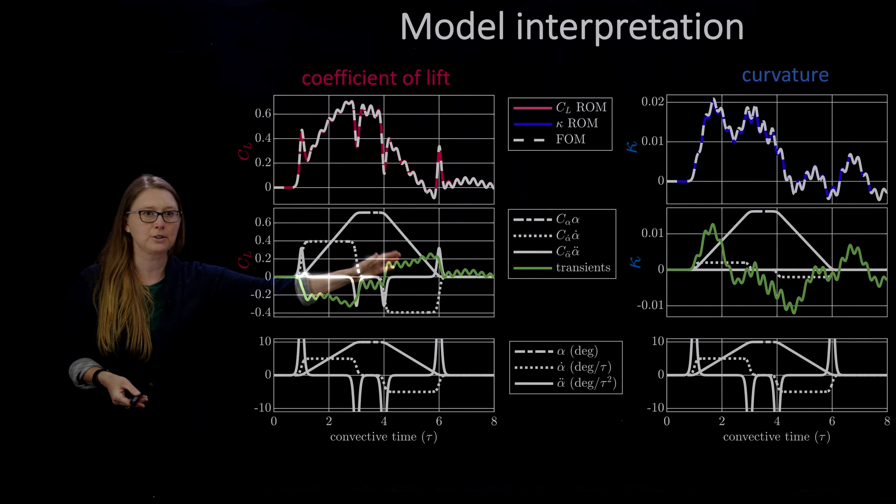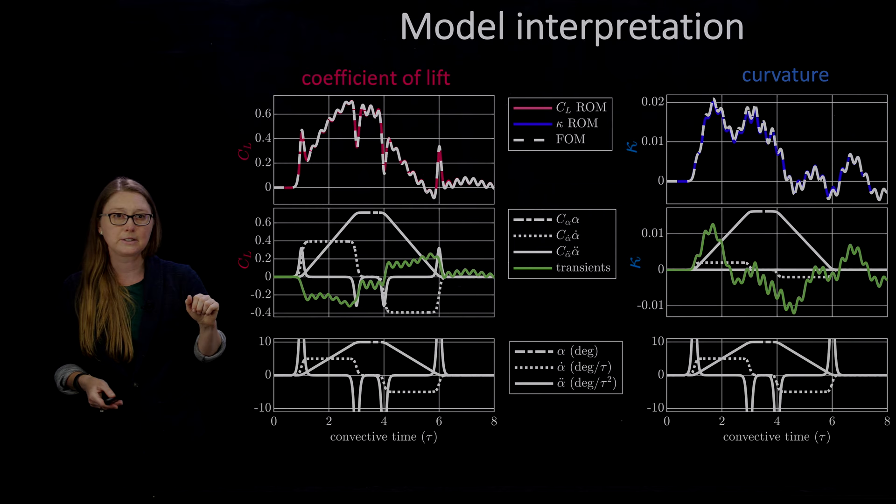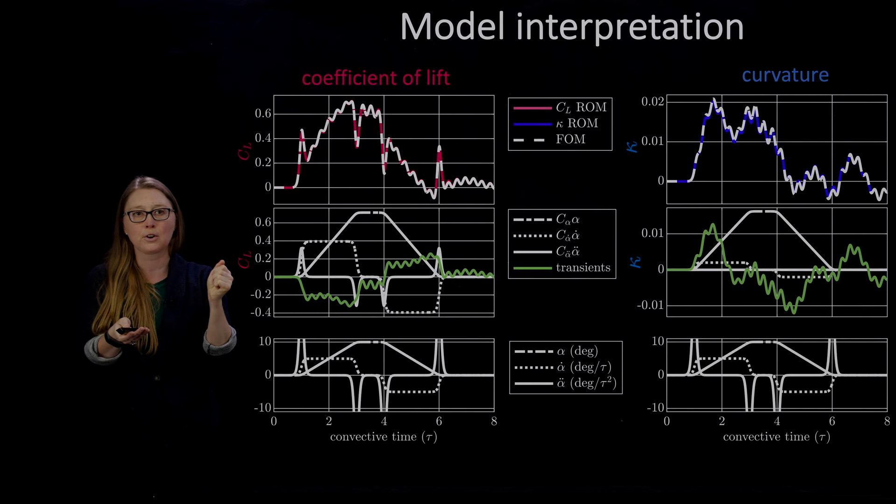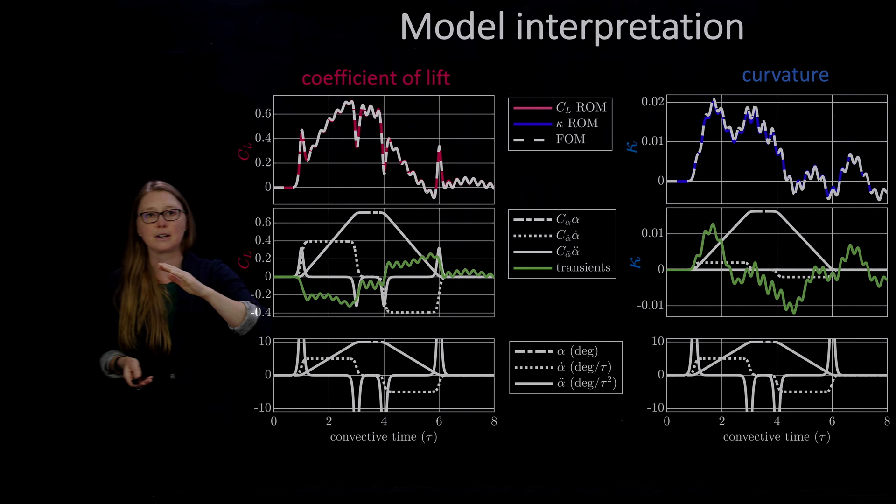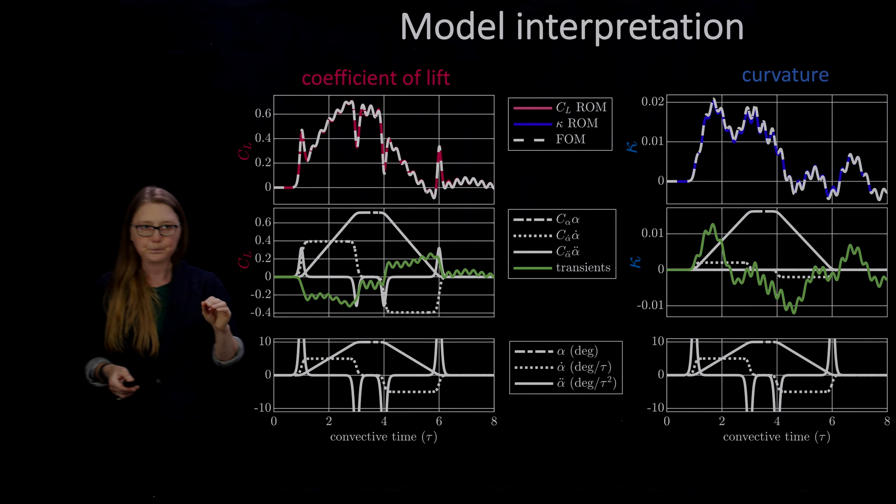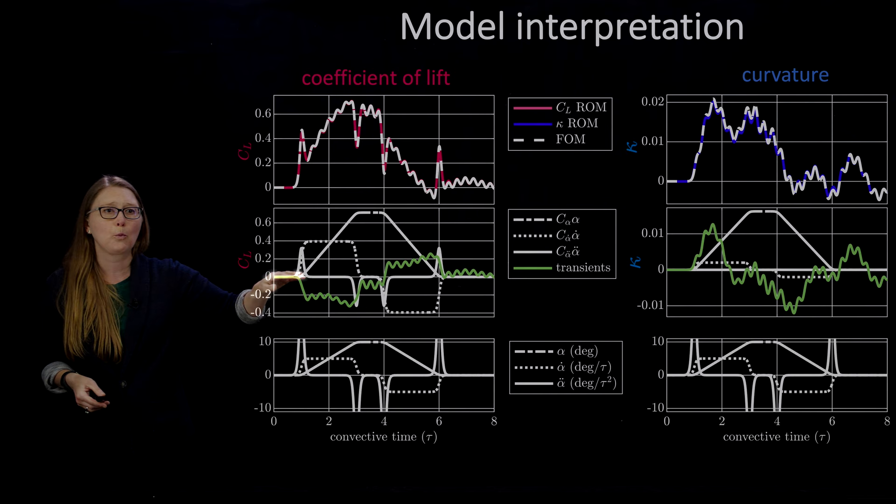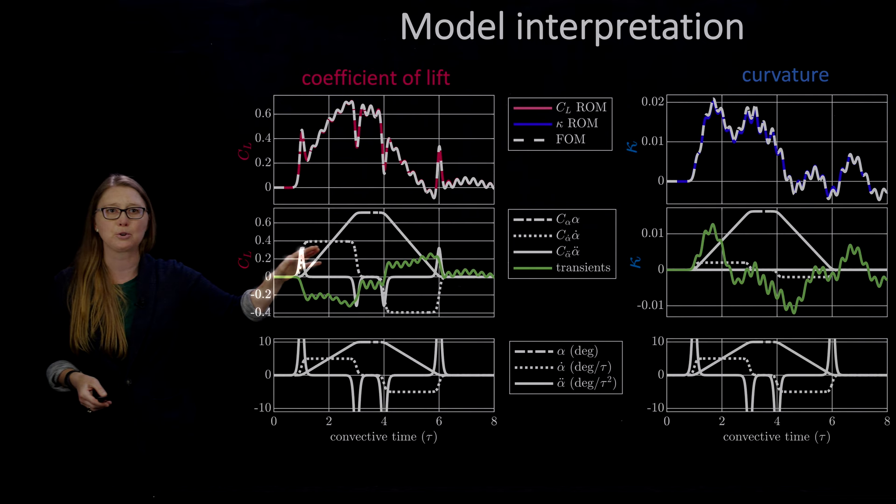Here's the fun part. So, we've got coefficient of lift over here. We've got curvature over there. And now, I've taken this upper curve and I've cracked it apart into each of the contributions from the angle of attack, the angular velocity, the angular acceleration, and the remaining transients and bending in that C matrix. So, in coefficient of lift, all of these curves are kind of similar sizes. That tells me that all of these contributions matter.